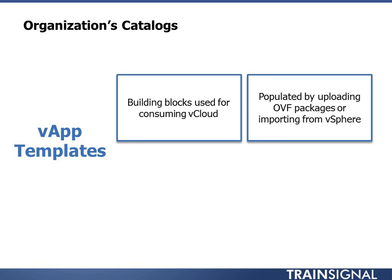In order to build vApp templates, you need to populate your catalog. This can be done by uploading OVF packages or importing directly from vSphere. OVF is a great way to take someone else's product — maybe they've built a vApp for you — and import it into your cloud. You've packaged it using OVF, the Open Virtualization Format, and you're putting it into your cloud. It's a good way to transfer from one cloud to another, or to get things into the cloud initially.